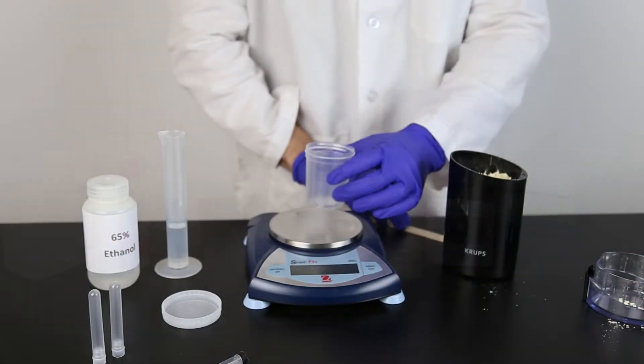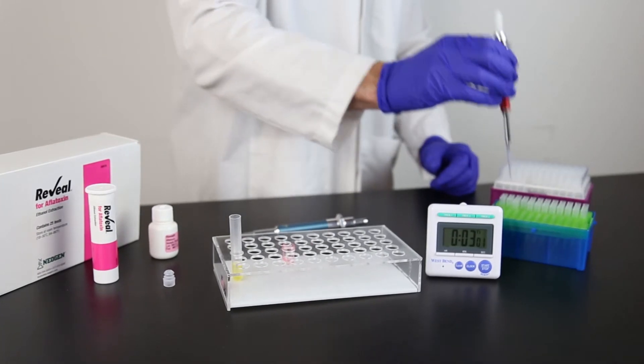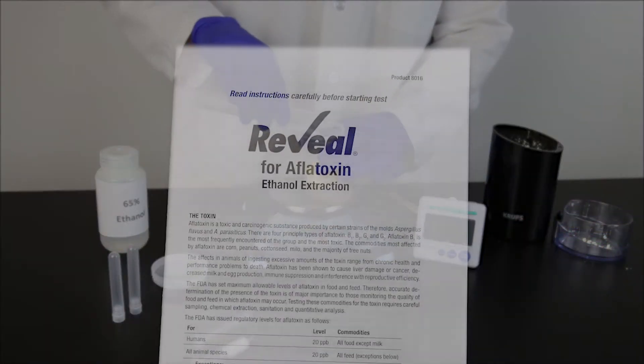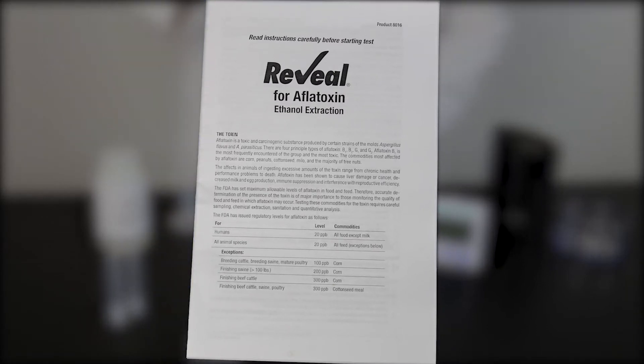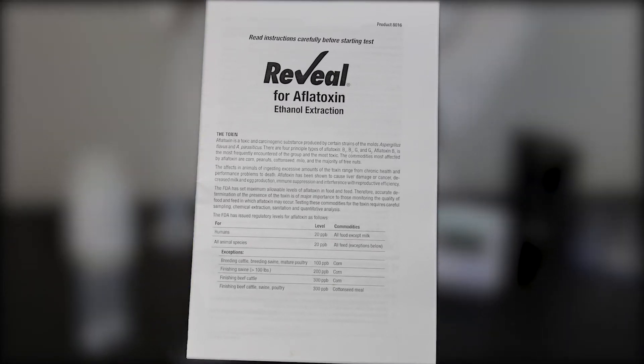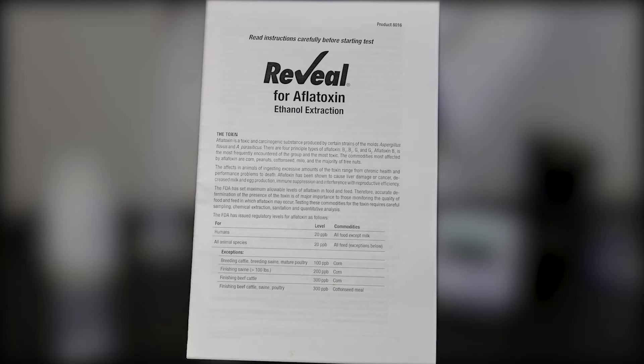This kit allows users to quickly screen corn for the presence of aflatoxin. This presentation serves only as a visual guide to the written materials supplied with the test kit. To ensure accuracy in the performance of this test, please read and follow the test's written instructions in their entirety.